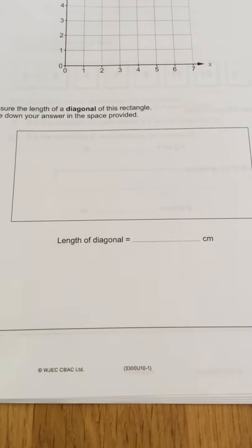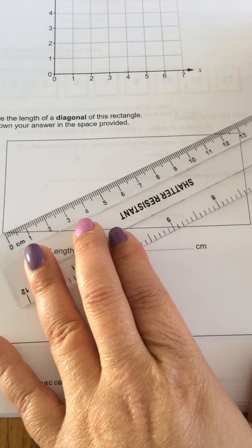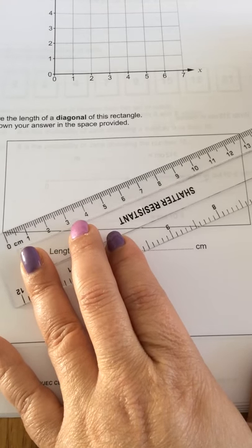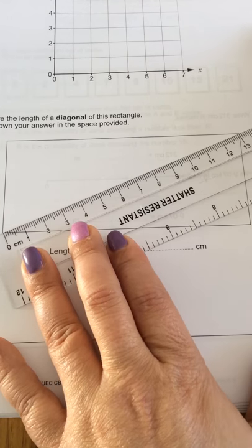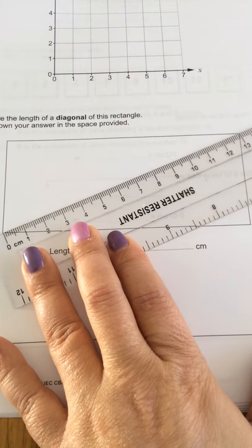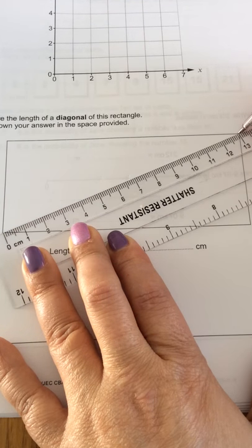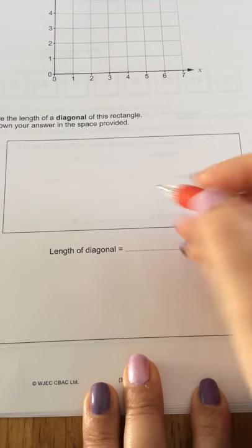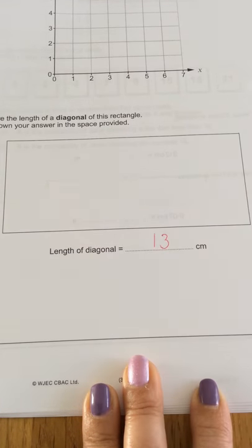I'm going to put my ruler on one end over to the other side. From corner to corner it measures exactly 13 centimeters, so I'm just going to write 13 centimeters here, and that question is done.